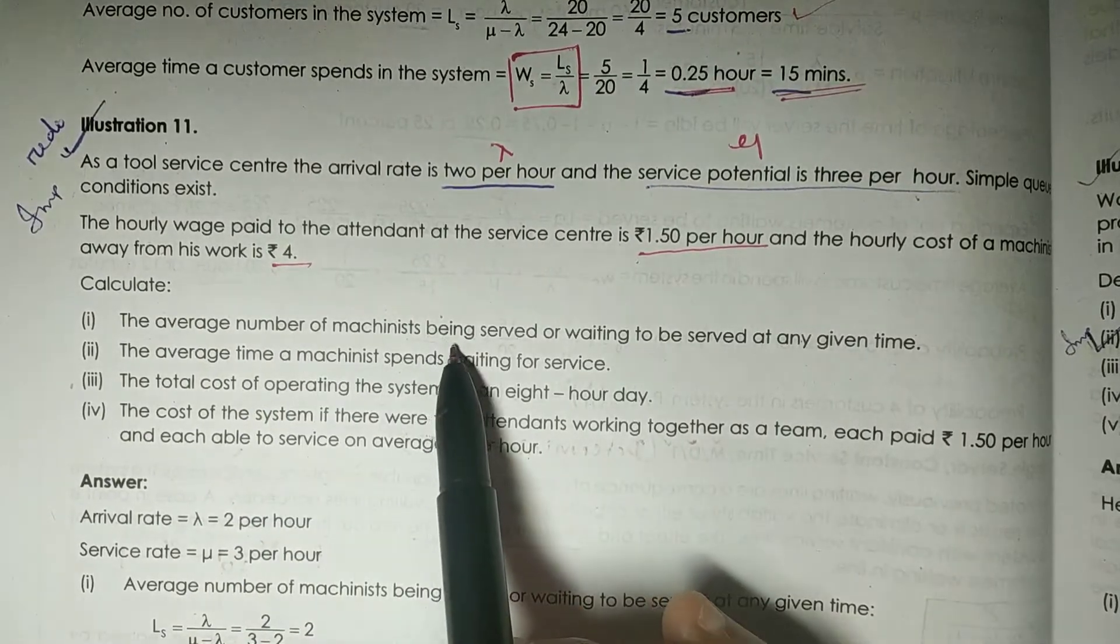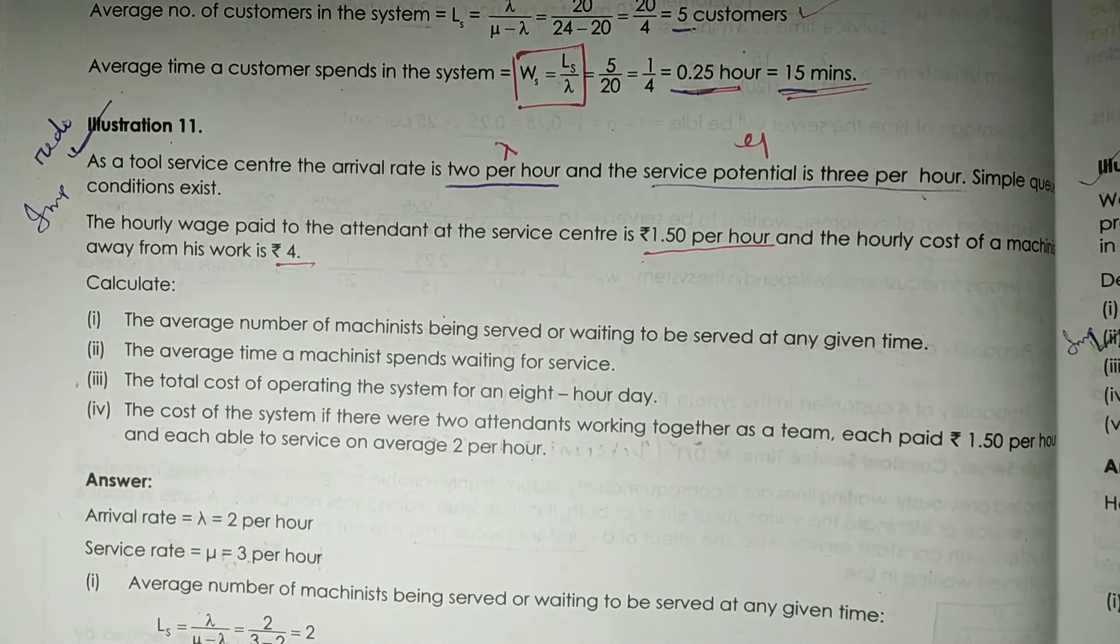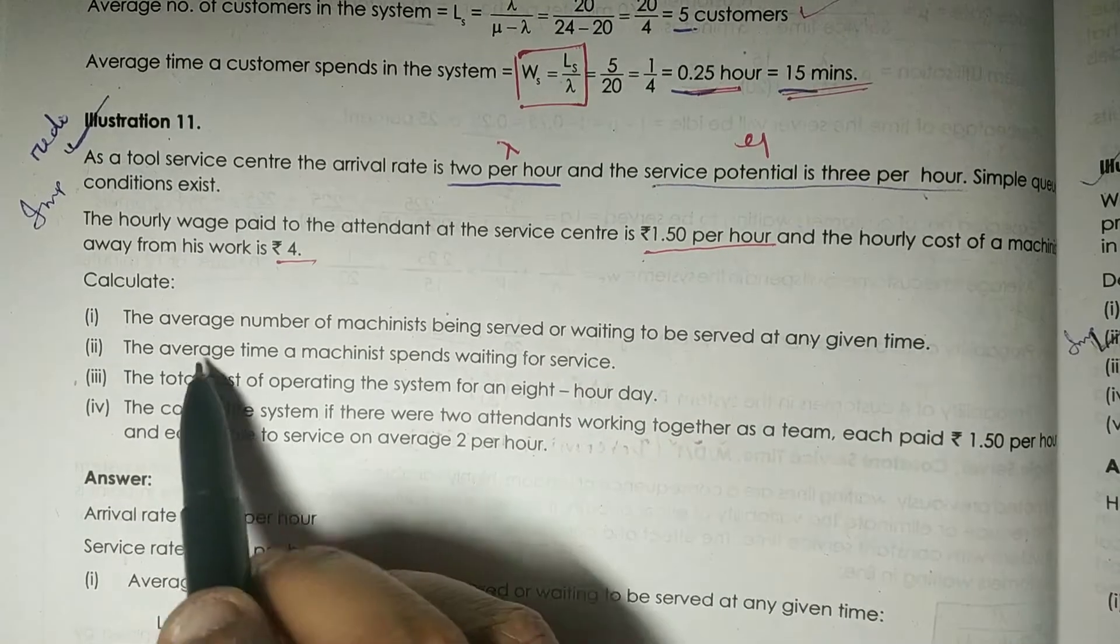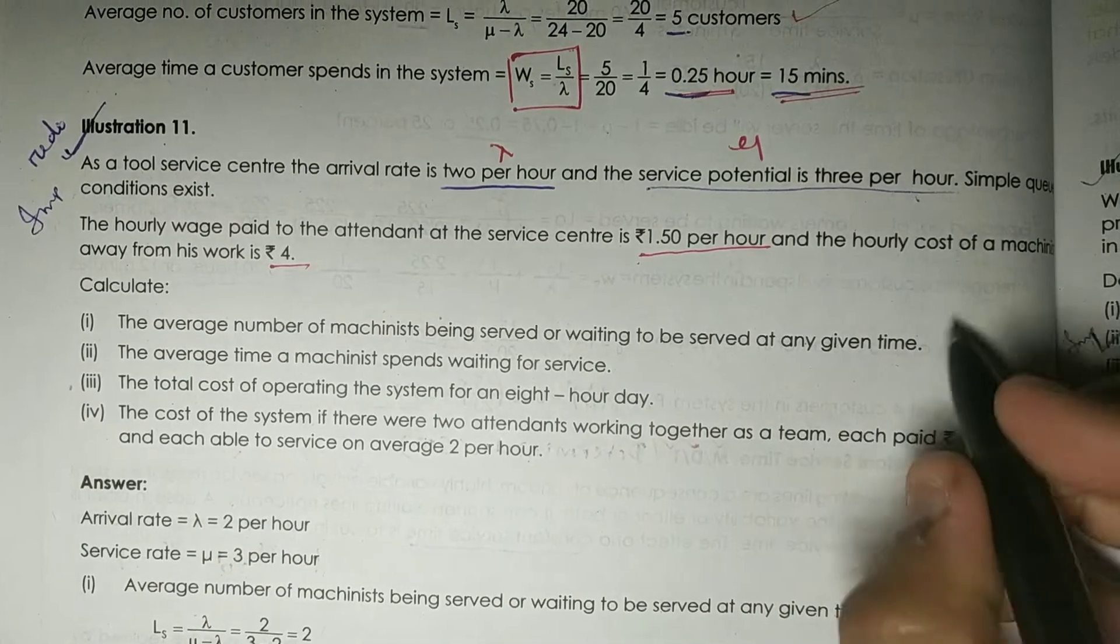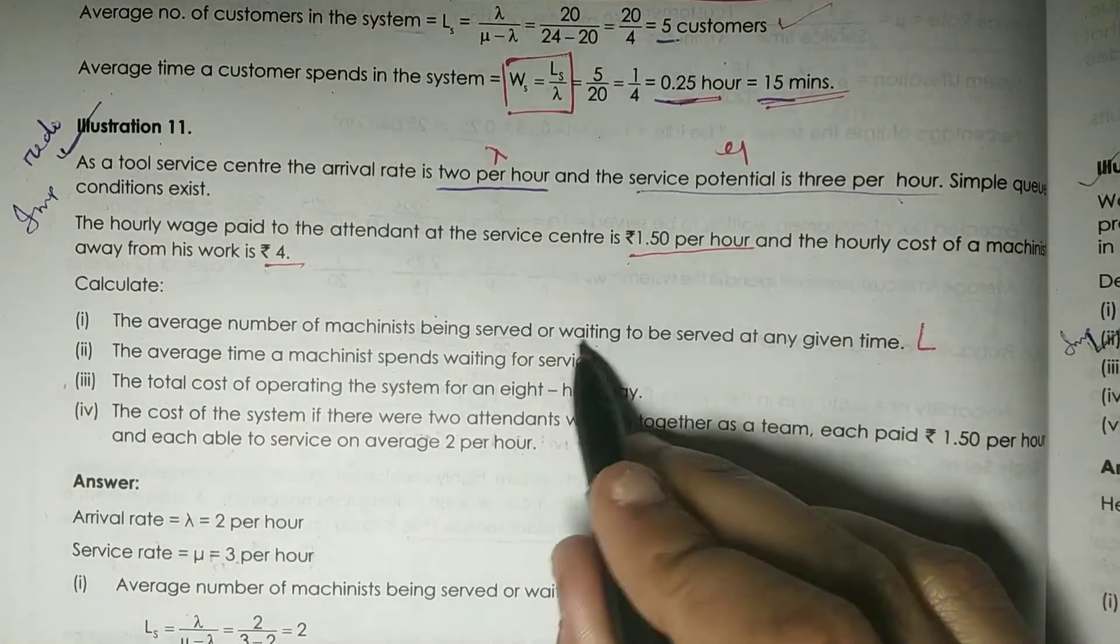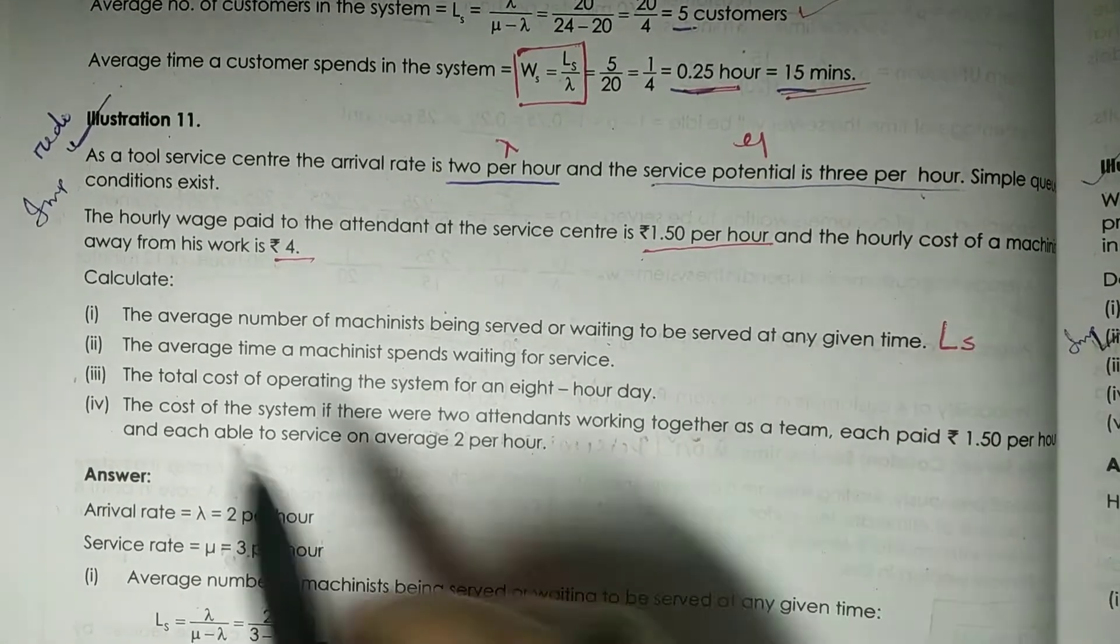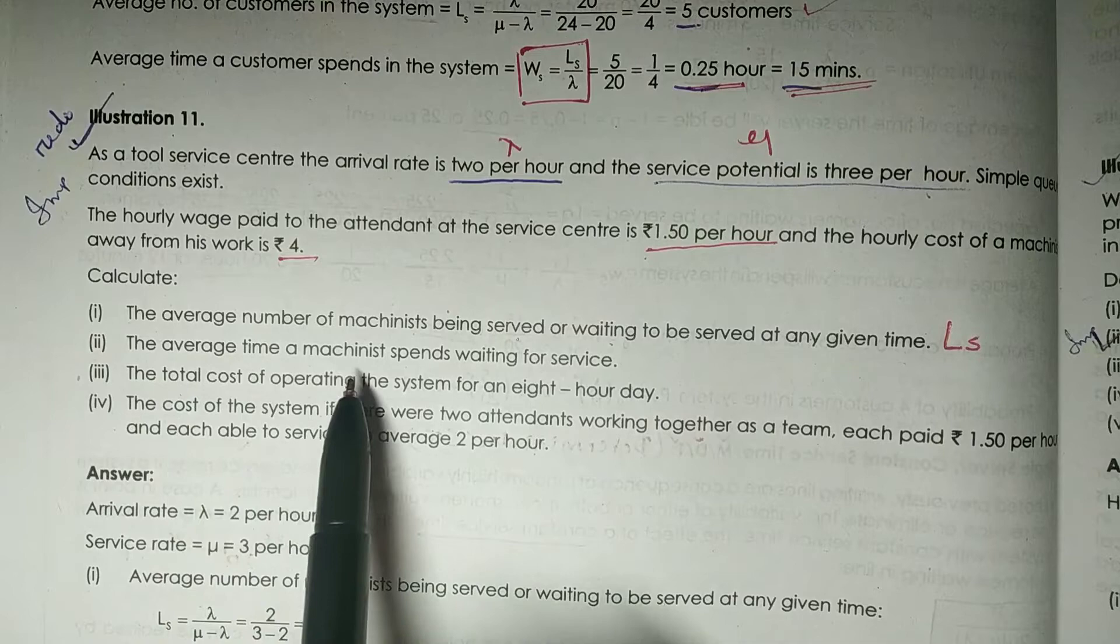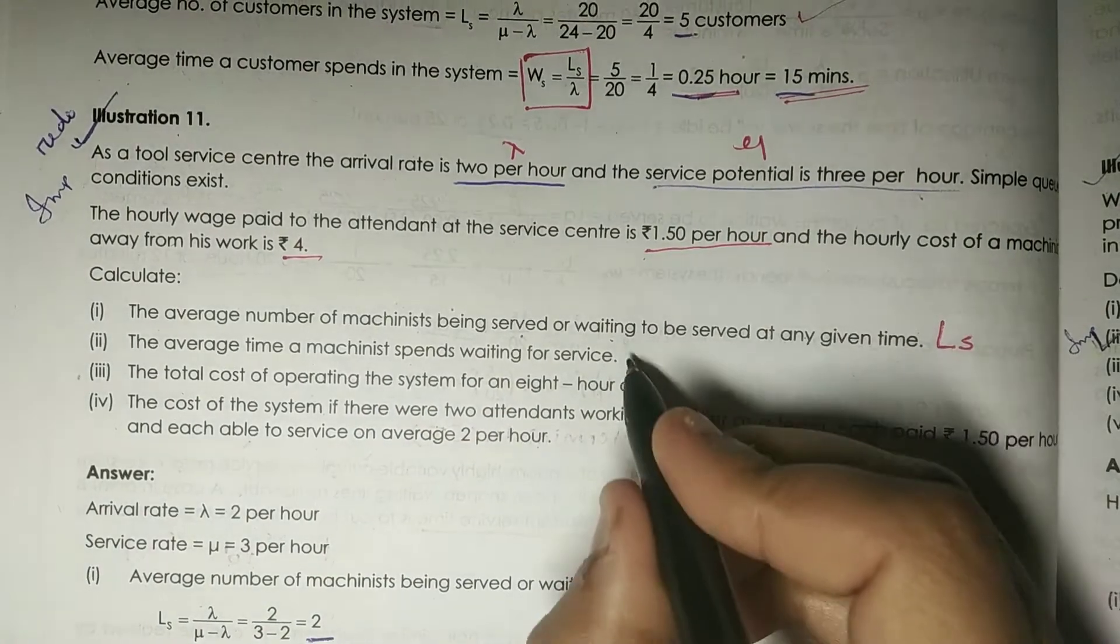The first one is average number of machinists being served or waiting to be served at any given time. That means this is your Ls, because it is asking for the length of the queue, served and waiting both.